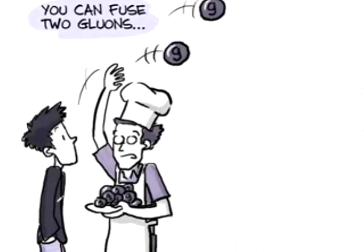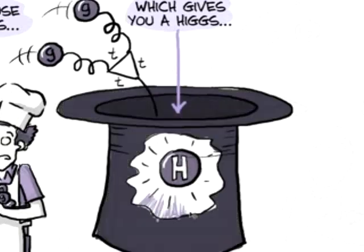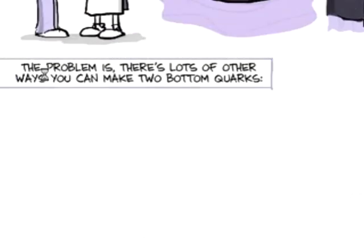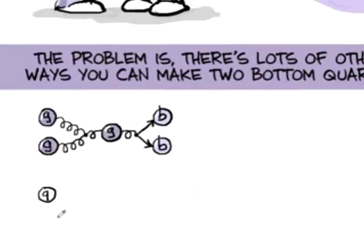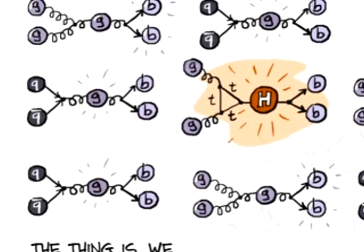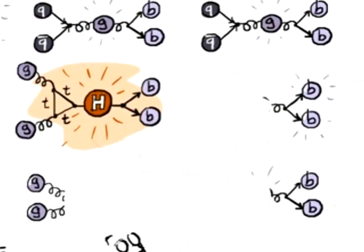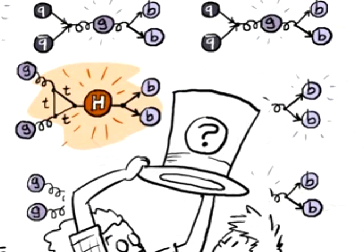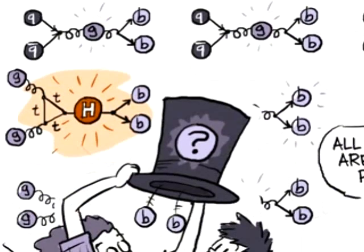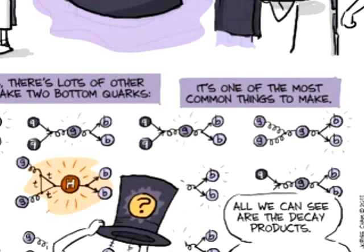So there's lots of different reactions that could give you the Higgs. For example, one is you could have two gluons fuse, give you a Higgs boson. And the Higgs could decay into two bottom quarks. The problem is, there's lots of other ways to make two bottom quarks. In fact, it's one of the most common things to make. You expect that to happen a million times more often from other kinds of processes than from the Higgs. The thing is, we can't see these reactions. We can't like watch them and slow them down, reverse them. All we can do is see the decay products from the reaction. So this part is all you see. And what you really want to know is, did this intermediate state exist?